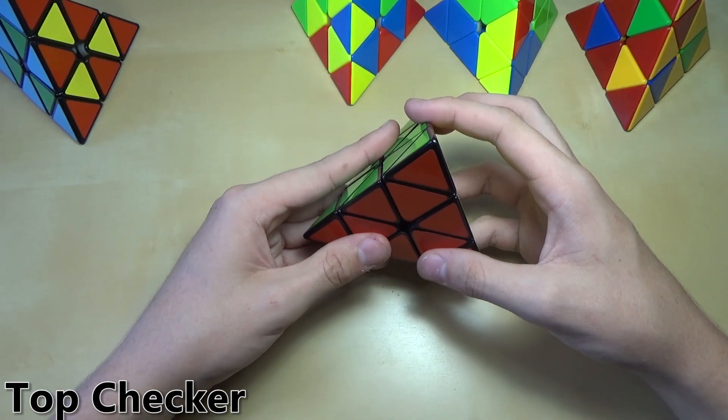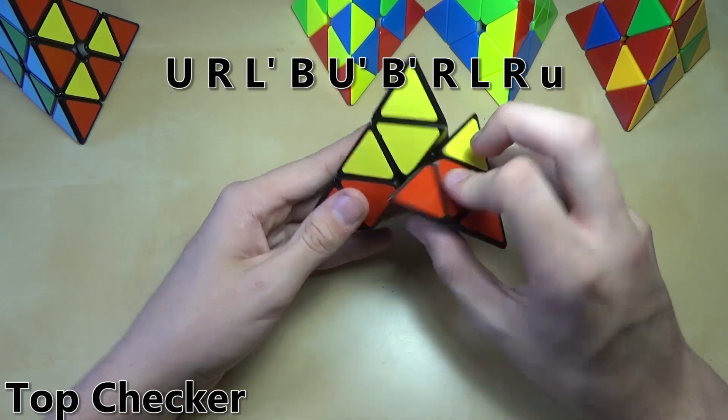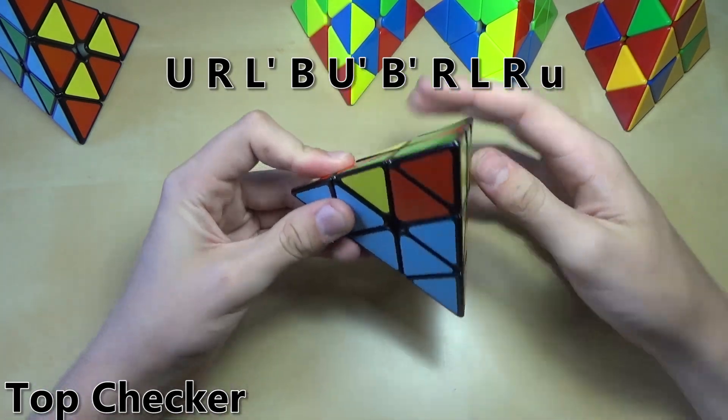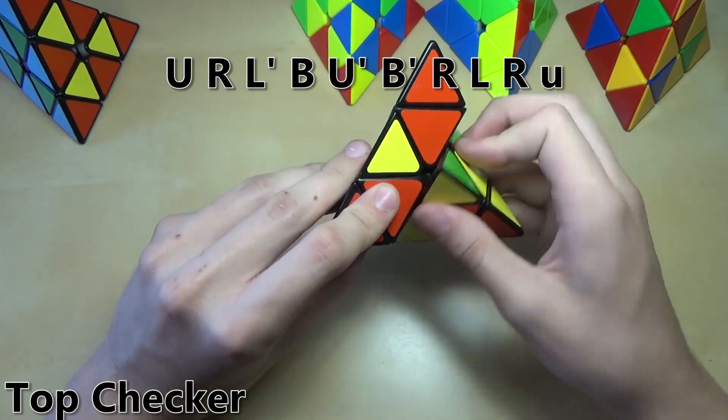What you want to do to make this pattern is identify the color that you don't want. I'll just use blue again. Put that on the bottom and then do this algorithm: U R L prime B U prime B prime R L R U.